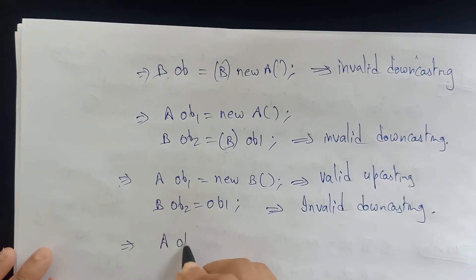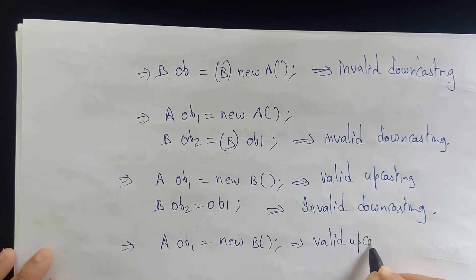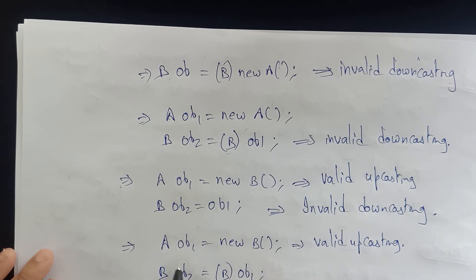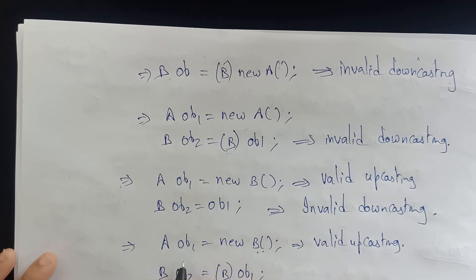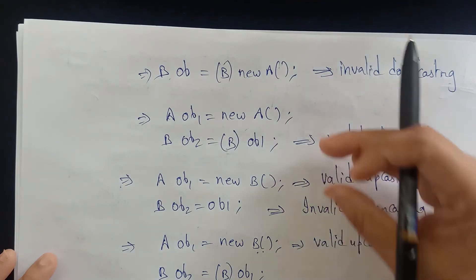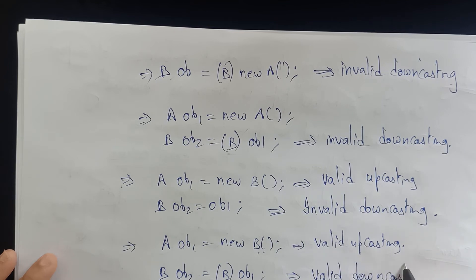Let's take A OB1 equal to new B — this is valid upcasting, we know that. Now what I am trying to do is B OB2 equals (B) OB1. Here the object is already created in the subclass, so whenever the object is created for B, memory is allocated to A also, because the superclass members are included. So this is valid downcasting — why? Because this is explicitly cast by the programmer.